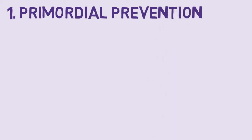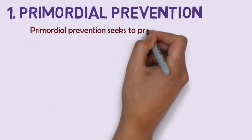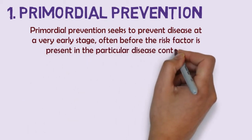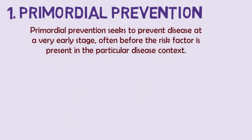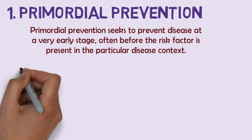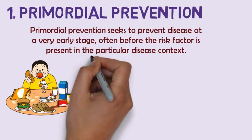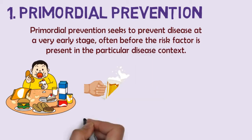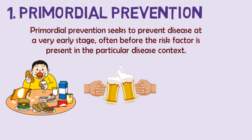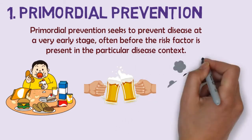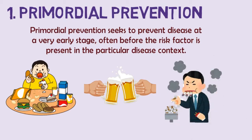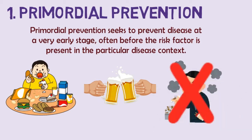Firstly, primordial prevention. Primordial prevention seeks to prevent disease at a very early stage, often before risk factors are present in a particular disease context. The aim of primordial prevention is to prevent the activities which encourage the emergence of lifestyles, behaviors and exposure patterns that contribute to increased risk of disease. For example, a child seeing their parents smoke cigarettes may wrongly consider this a good lifestyle choice for later in life. Advising parents to quit smoking in such circumstances can be considered primordial prevention.